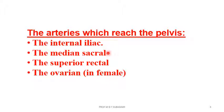The branches of the median sacral are mainly the fifth pair of lumbar arteries, branches to the anterior sacral foramina of the sacrum to reach the back, and branches to the rectum and the anal canal.